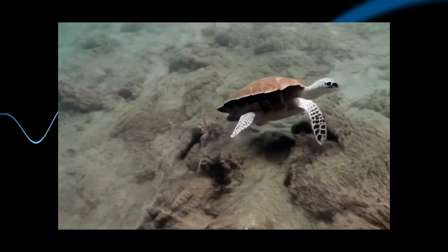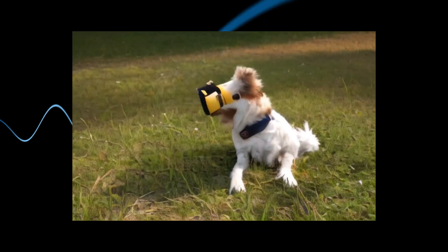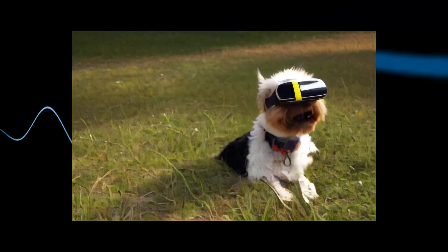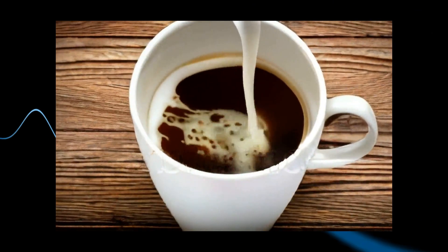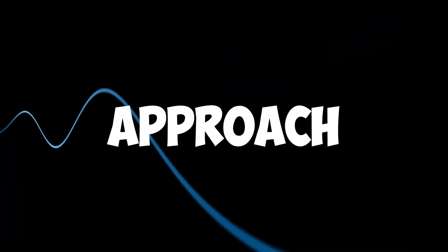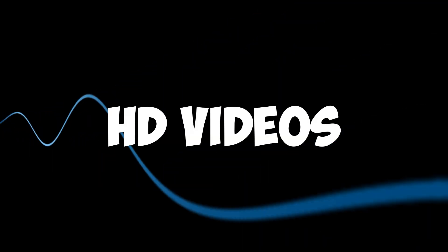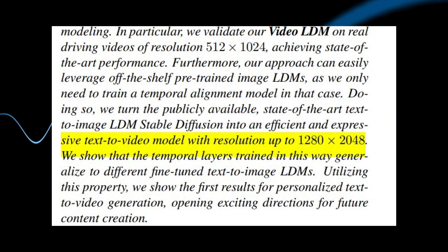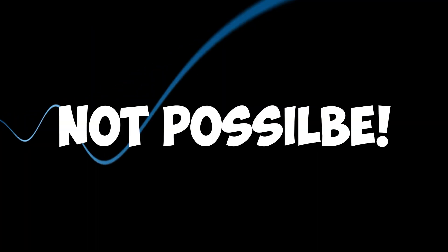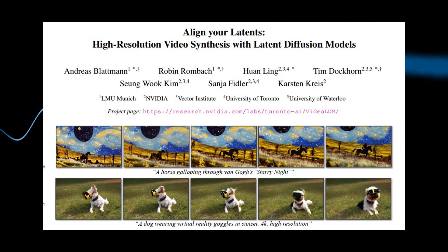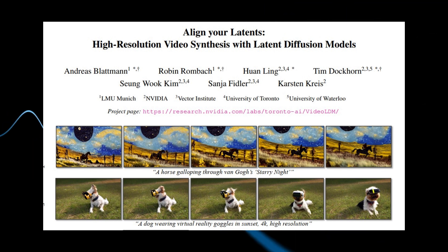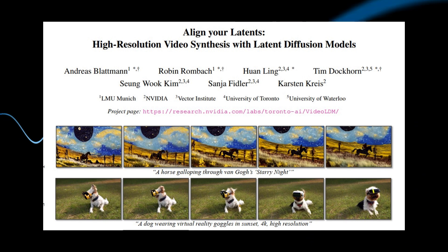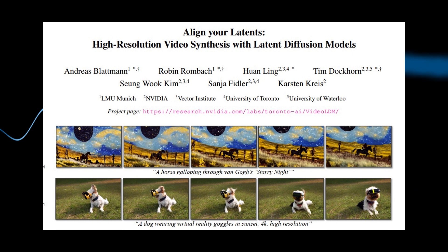There is a new technique to achieve temporal consistency, which means that the subsequent frames in the video have interdependencies and as a result the output video is really smooth. With this approach they are now able to generate videos with a much higher resolution — up to 1280 by 2048 — which was previously not possible. In this work they are using stable diffusion-based models to create high resolution images using their latent space, and the results are pretty amazing.